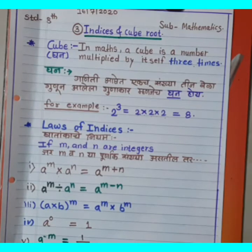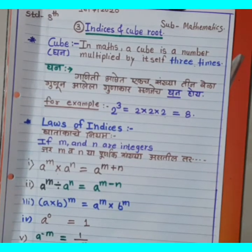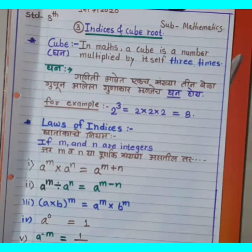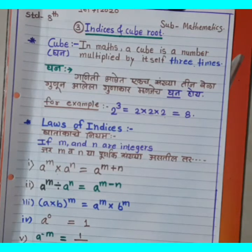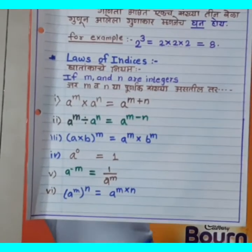Sixth Rule: A raise to M, bracket raise to N, is equal to A raise to M×N. That is, (A^M)^N = A^(MN). A cha M waa ghat raised to N equals A cha M times N waa ghat.